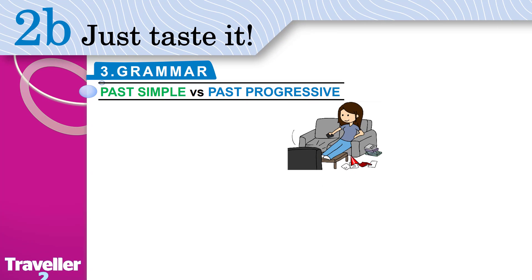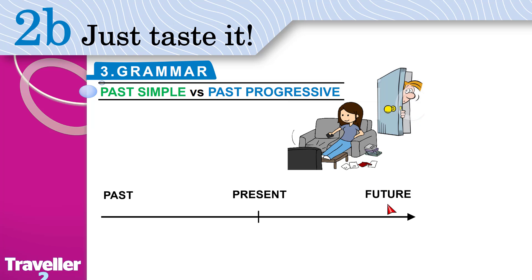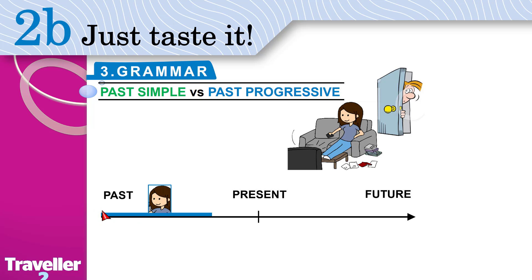She's watching TV and then later somebody opened the door. This is the timeline: things happening right now are here, things that happened in the past are here, things in the future are here. Both actions happened in the past — first the girl was watching TV, she started and kept going, and then the man opened the door. That action is long, and then this short action happened.